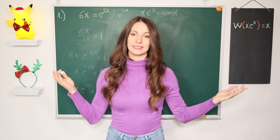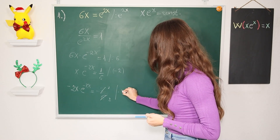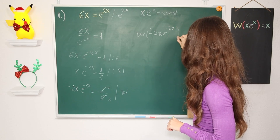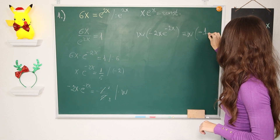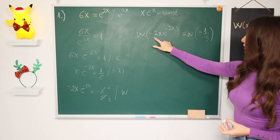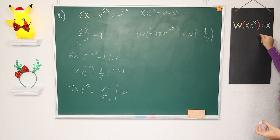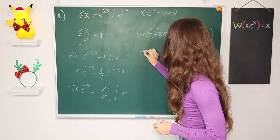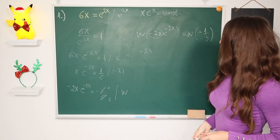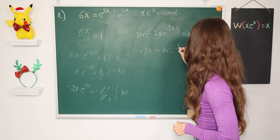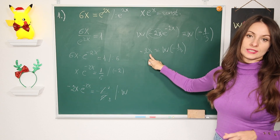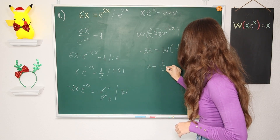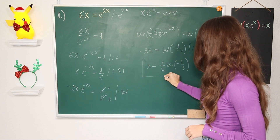This is the moment to apply the Lambert W function to both sides. W(−2x · e^(−2x)) = W(−1/3). Using the identity W(x·e^x) = x, the left side simplifies to −2x. So −2x = W(−1/3). Dividing both sides by −2 gives x = −(1/2) · W(−1/3). This is our result.